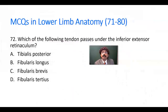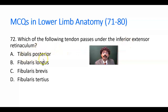Question number 72. Which of the following tendons passes under the inferior extensor retinaculum? Options: tibialis posterior, fibularis longus, fibularis brevis, fibularis tertius. D is the answer.